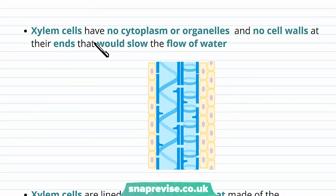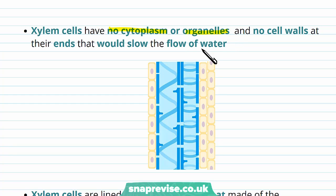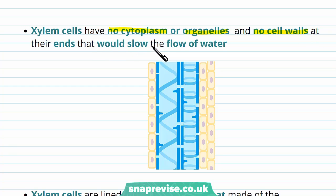The xylem cells being dead have very little inside them. They have no cytoplasm — none of the gel-like liquid usually found within cells — and they don't have any organelles either, so there's no nucleus, mitochondria, or anything like that. The cell walls don't exist at the ends of the cells going through the tube; they only exist at the sides. This is all to help the flow of water and make it as fast as possible.